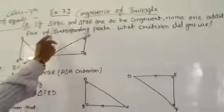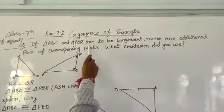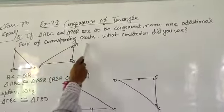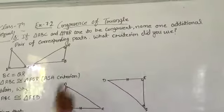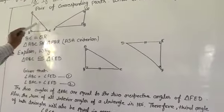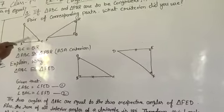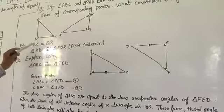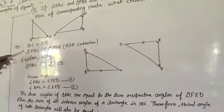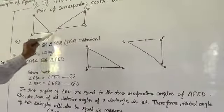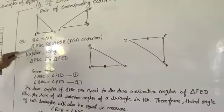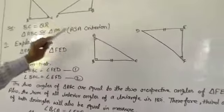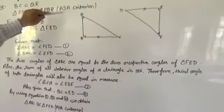Question 8: If triangle ABC and triangle PQR are to be congruent, name one additional pair of corresponding parts. BC is equal to QR. Then triangle ABC is congruent to triangle PQR by AAS criterion, which means two angles and one side.